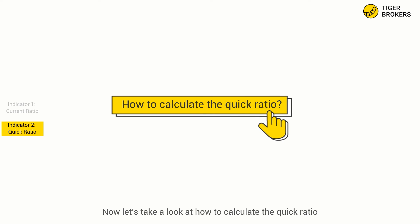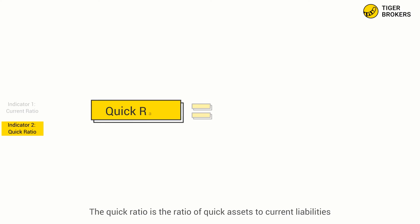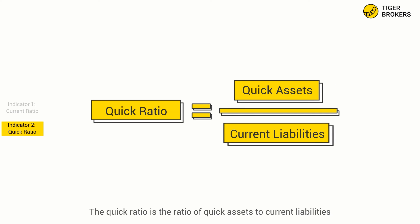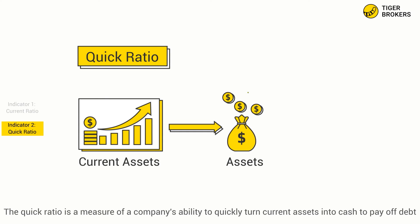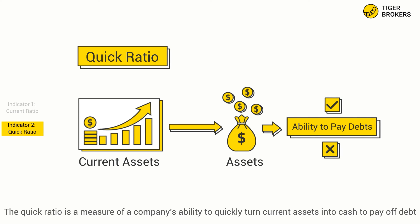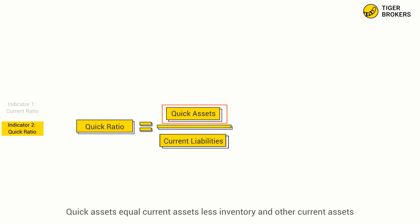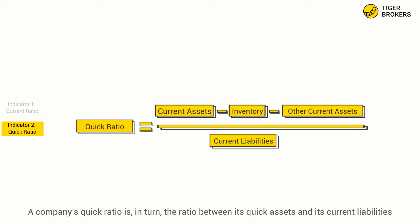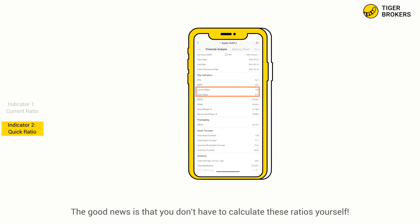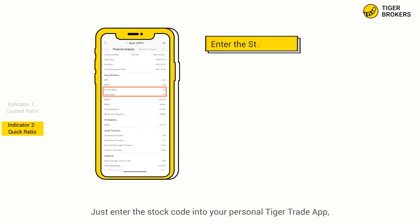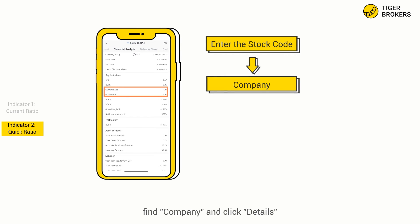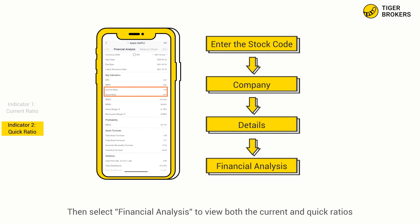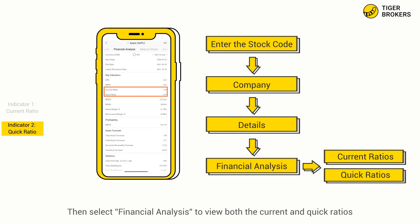Now let's take a look at how to calculate the quick ratio. The quick ratio is the ratio of quick assets to current liabilities — a measure of a company's ability to quickly turn current assets into cash to pay off debt. Quick assets equal current assets less inventory and other current assets. The good news is that you don't have to calculate these ratios yourself. Just enter the stock code into your TigerTrade app, find the company and click details, then select financial analysis to view both the current and quick ratios.